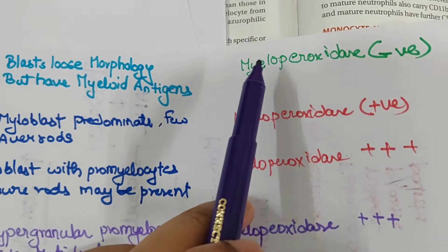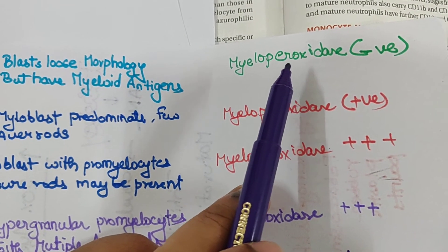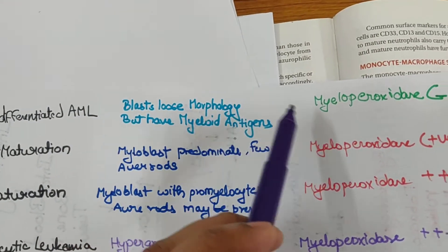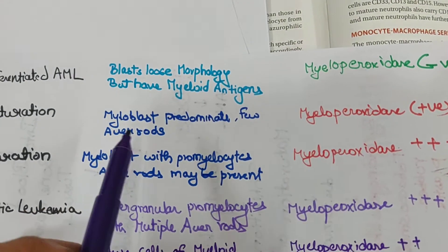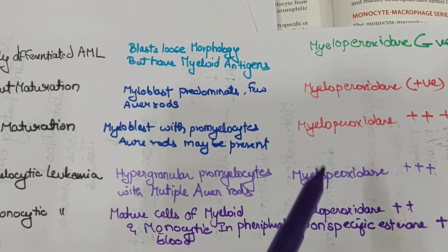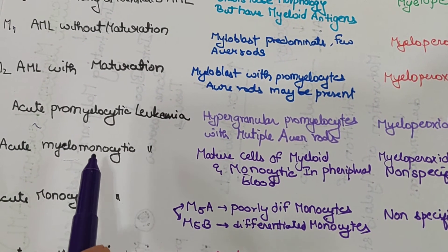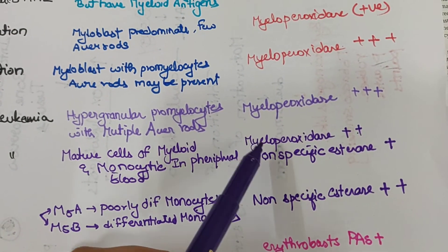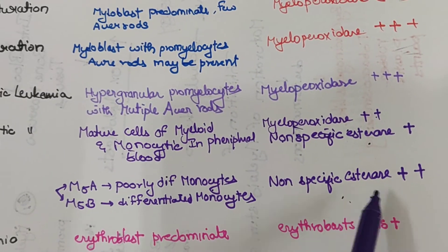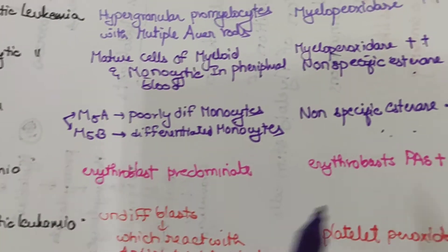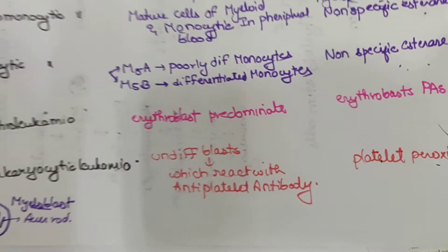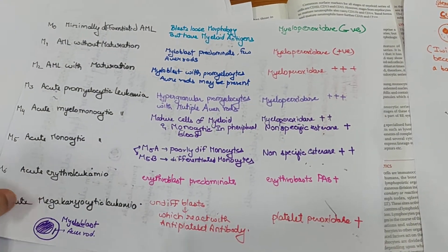The third column covers lab markers. Myeloperoxidase is positive when Auer rods are present. M0 is myeloperoxidase negative (no Auer rods). M1, M2, and M3 are myeloperoxidase positive (Auer rods present). M4 (myelomonocytic) is both myeloperoxidase positive and non-specific esterase positive. M5 (monocytic) is non-specific esterase positive. M6 (erythroleukemia) is PAS positive, and M7 (megakaryocytic) is platelet peroxidase positive.